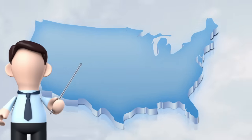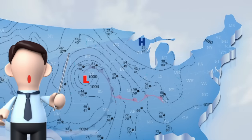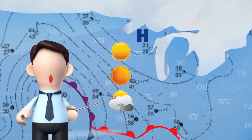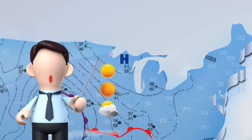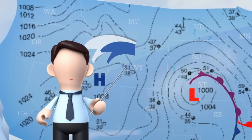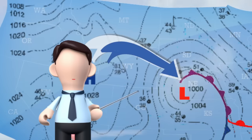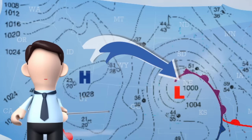The H's represent an area of higher air pressure. Higher air pressure is generally associated with fair, or good, weather. Air is moving in a clockwise fashion away from the high pressure.